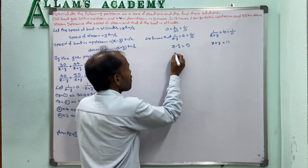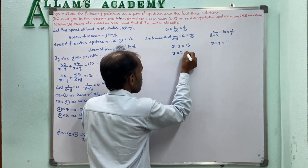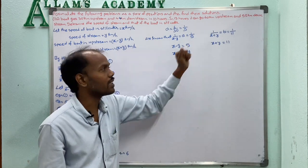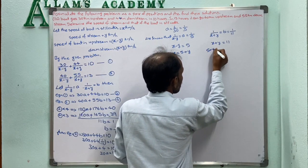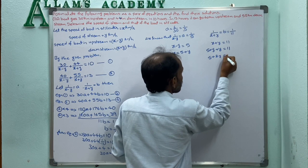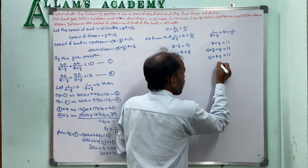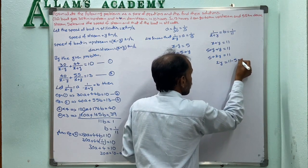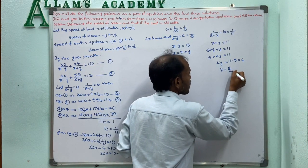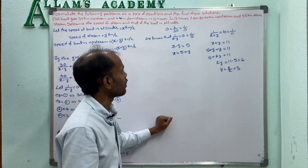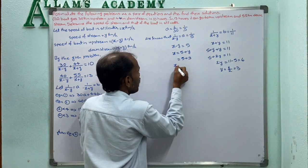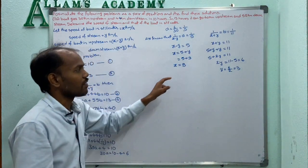Solving by substitution: from X minus Y equals 5, X equals 5 plus Y. Substituting into X plus Y equals 11: 5 plus Y plus Y equals 11, so 5 plus 2Y equals 11, giving 2Y equals 6 and Y equals 3. Then X equals 5 plus 3 equals 8.